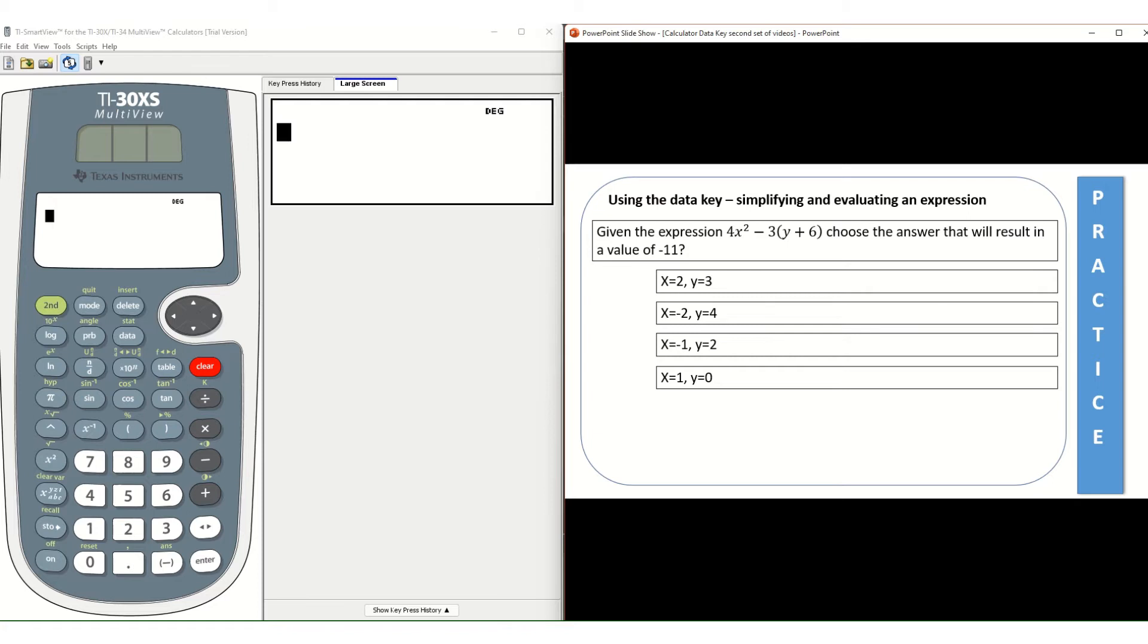And so we are going to go ahead and press the data key because we need to start entering information. So the data key is the second row third column where you'll see it and we're gonna press that and you'll notice there are three different lists: L1, L2, and L3.